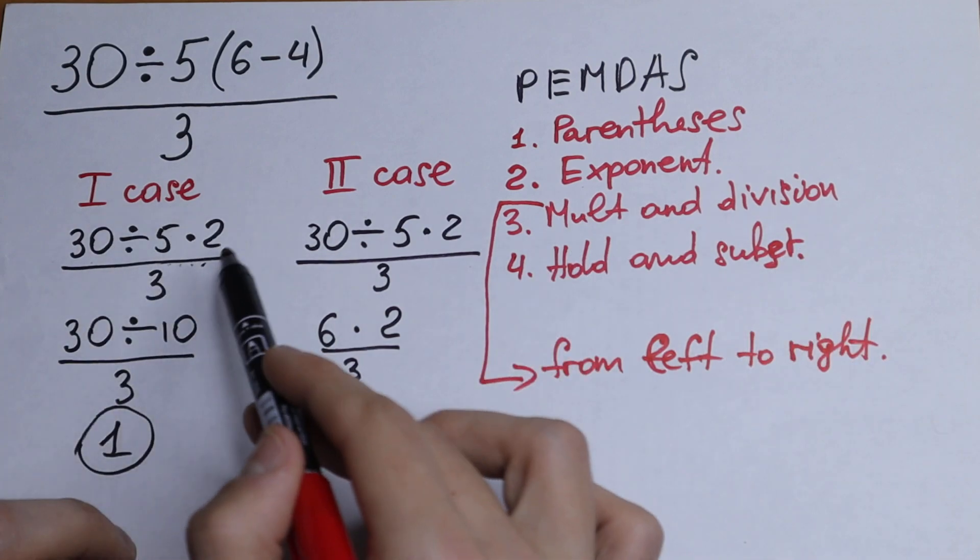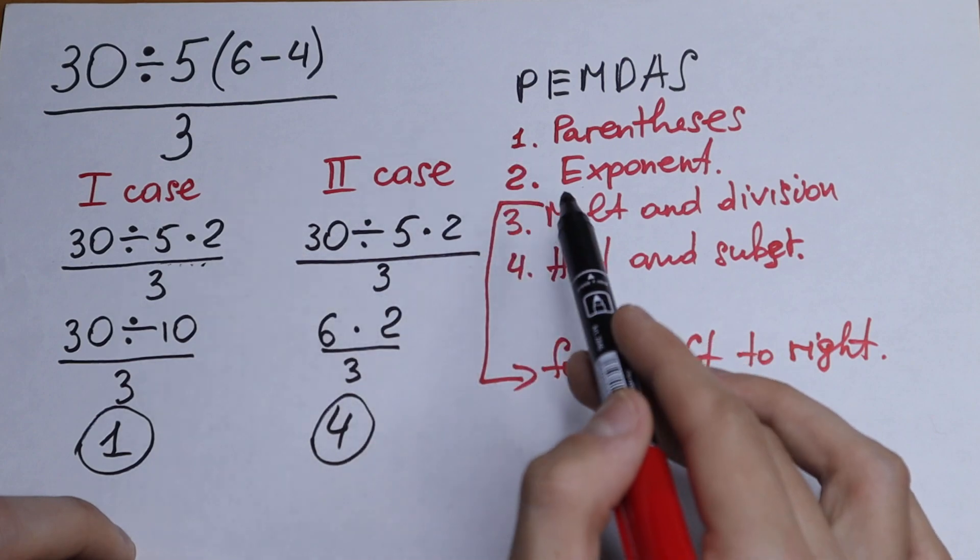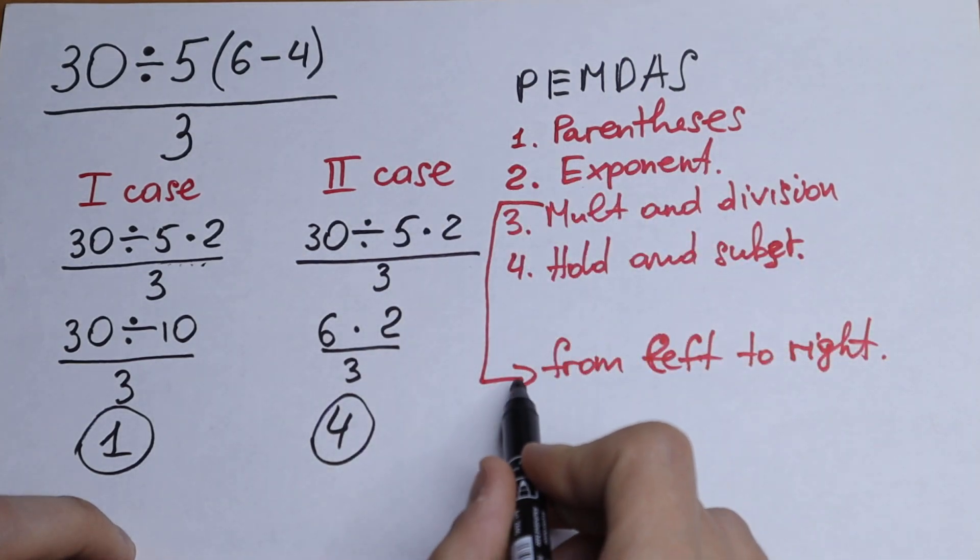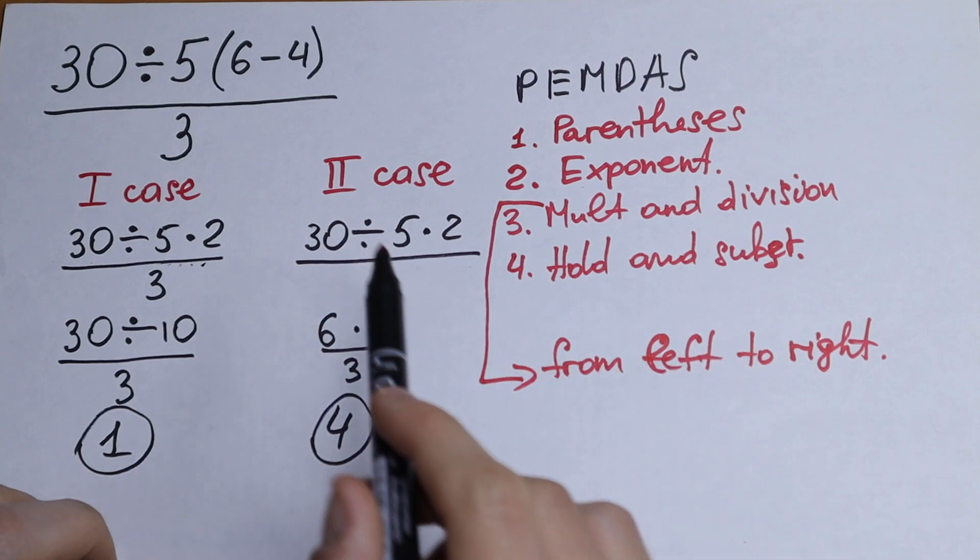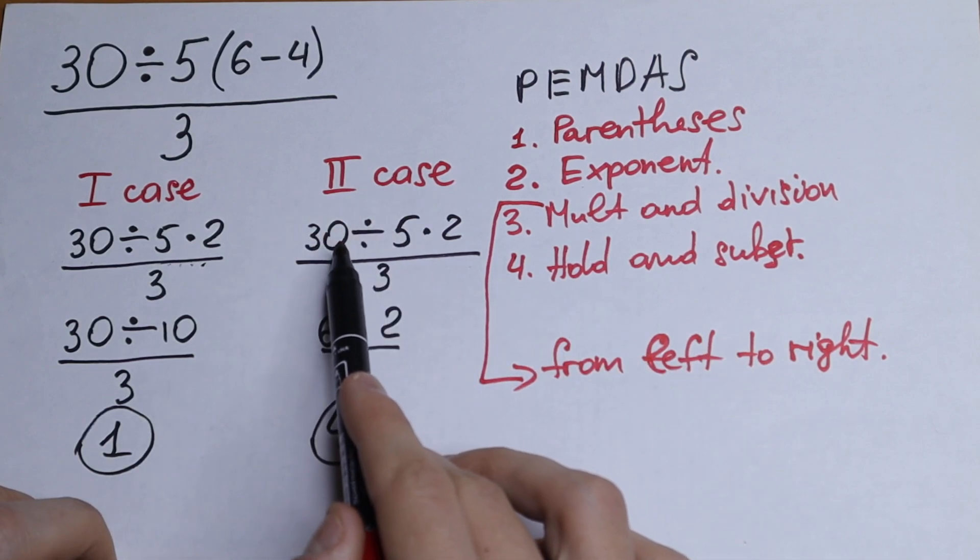And if we have division, multiplication, divisions, and once more multiplication, we do the thing from left to right. So from left to right, we do in second case.